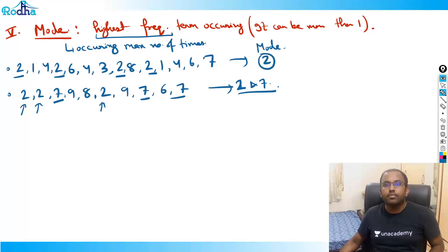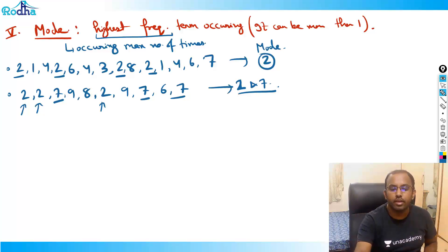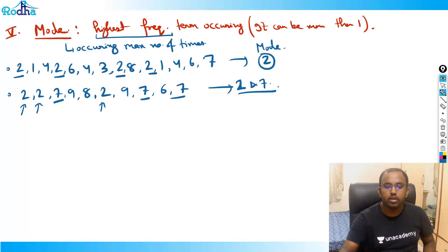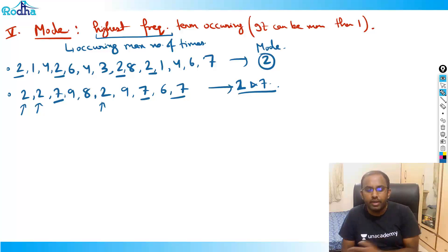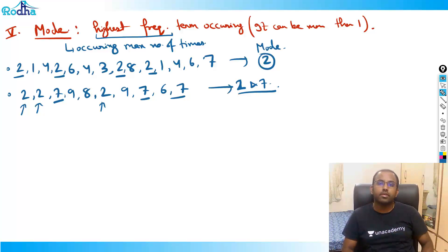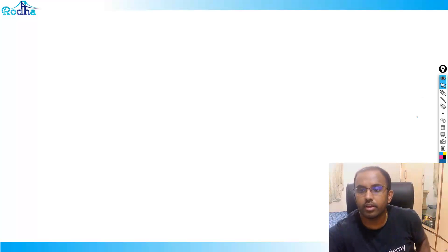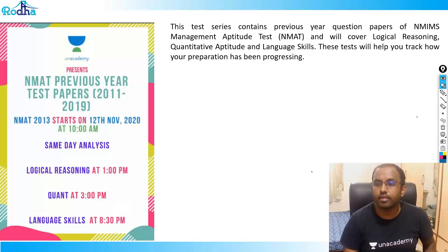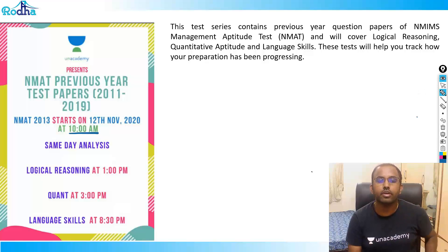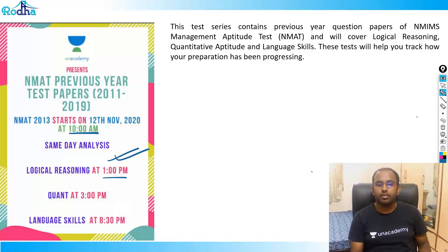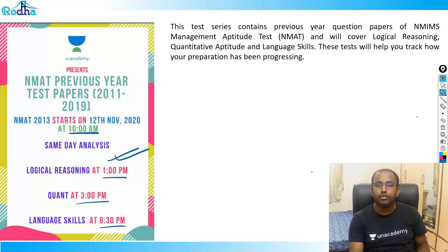In this video we saw the 5 measures of central tendency. In the next video, we will cover the 5 measures of central dispersion — range, quartile deviation, mean deviation, standard deviation, and variance. After that, we'll see questions in further videos. That's how we plan the statistics series. The NMAT mock link I will put in the comment box — NMAT is on 12th November at 10 AM. It is absolutely free for everyone. See you in the next video, keep sharing, bye!